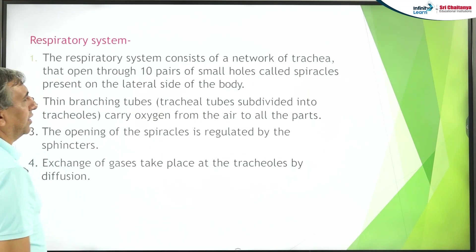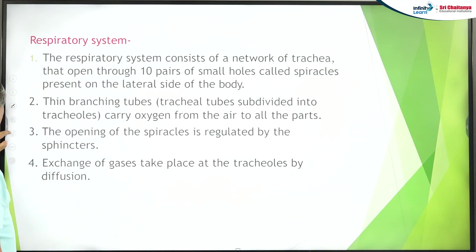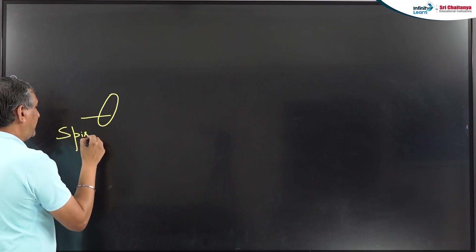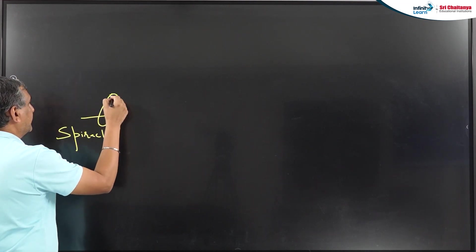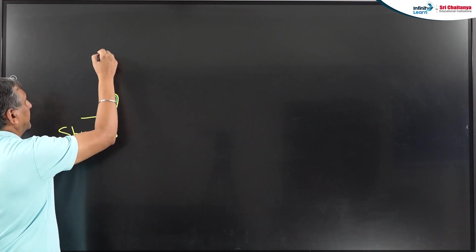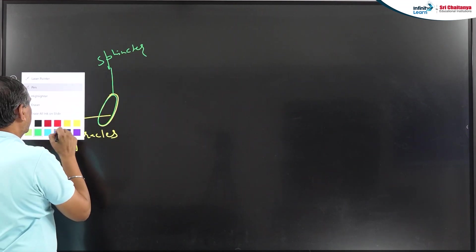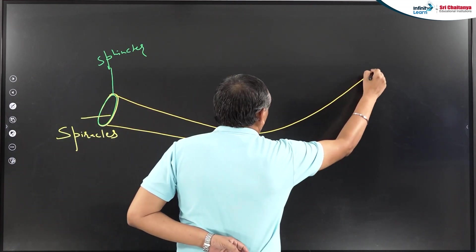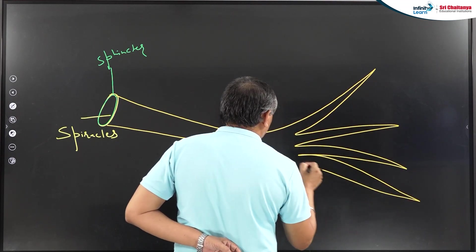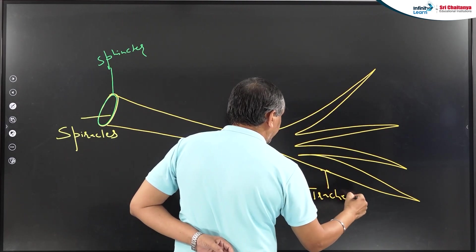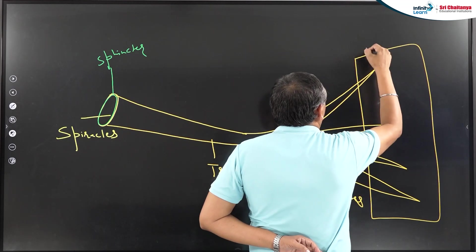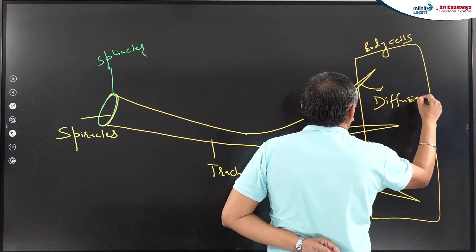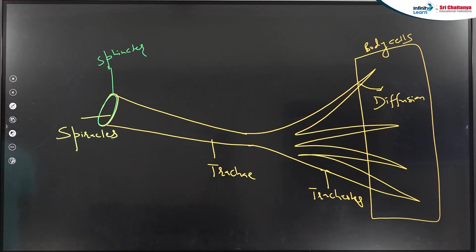For the respiratory system, remember this diagram: spiracles are openings present on the body surface. Opening and closing of the spiracles is controlled by muscles. The spiracles open into a structure known as the trachea. The branches of the trachea are known as the tracheoles. These tracheoles come in direct contact with the body cells. Exchange of gases takes place at the level of tracheoles and body cells by the process of diffusion.